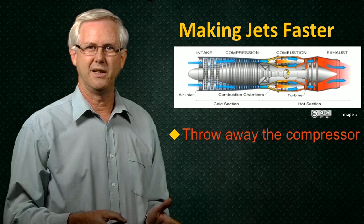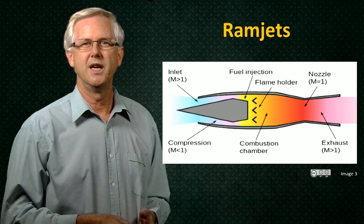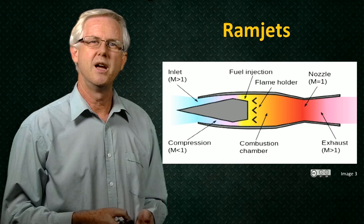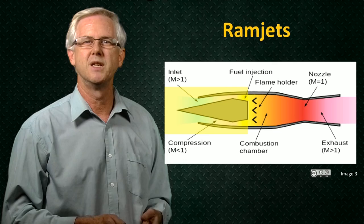So we can throw away the compressor, we can throw away the turbine, and we'll see what we have left. Well, what's left is a ramjet. So a ramjet is a jet engine without a compressor or a turbine. The ramjet has an inlet to take the air in and slow it down. In so doing, the inlet raises the pressure and temperature of the air.